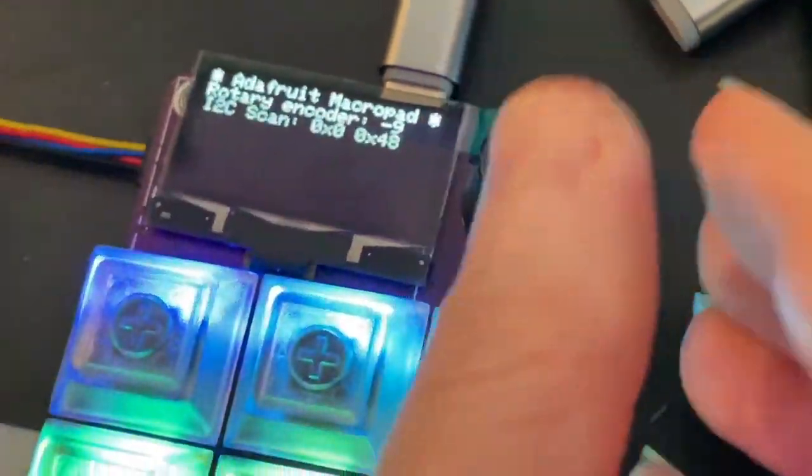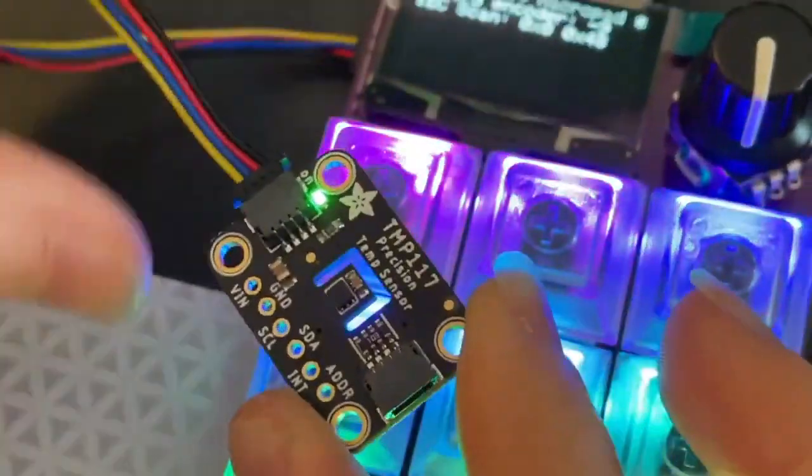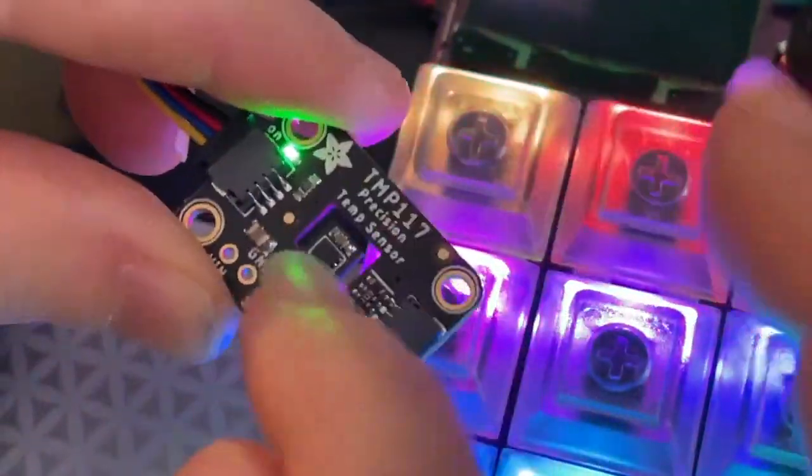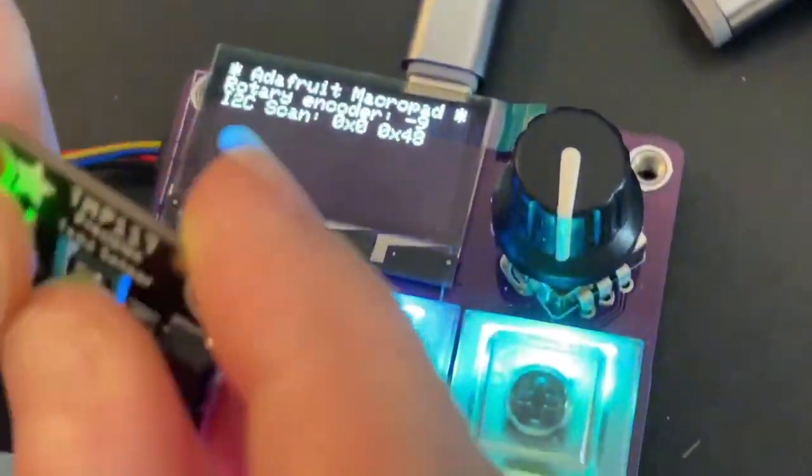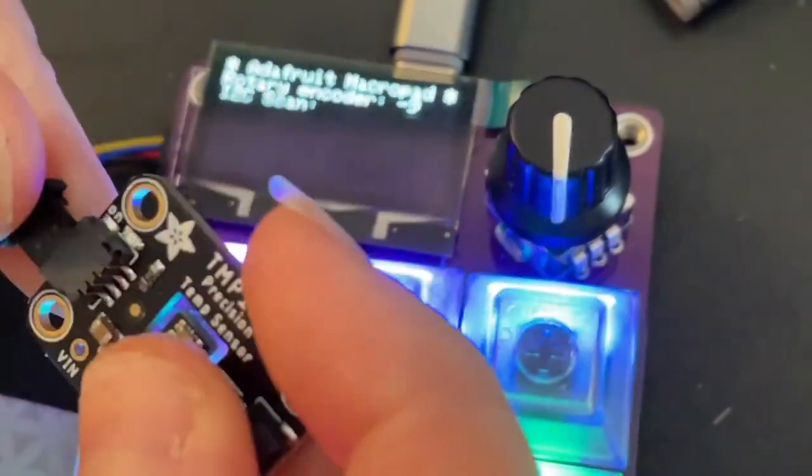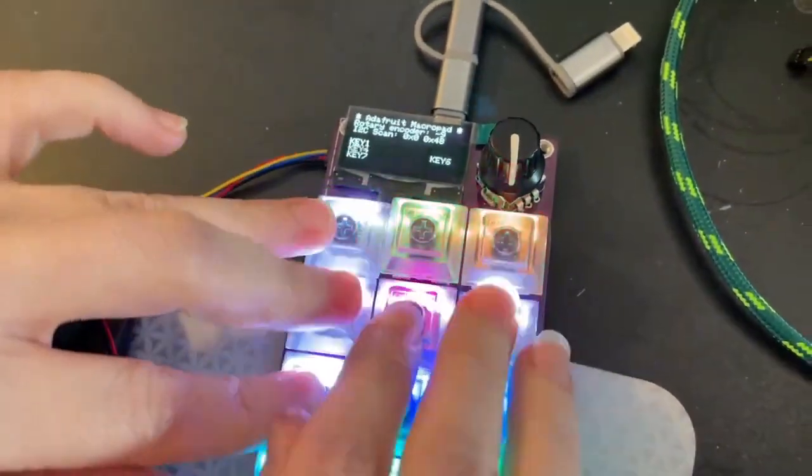And then finally I'm doing a little I squared C scan with the STEMMA QT sensor. So you can see here when I have it plugged in it says there's something detected. When I remove it it's like there's nothing detected. So this is my little hardware bring-up test, but so far so good.